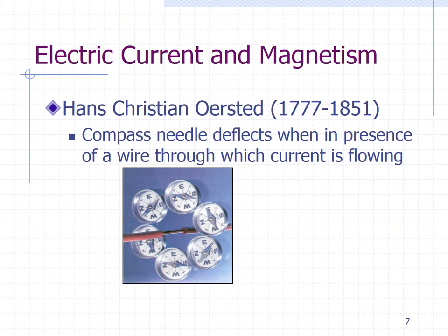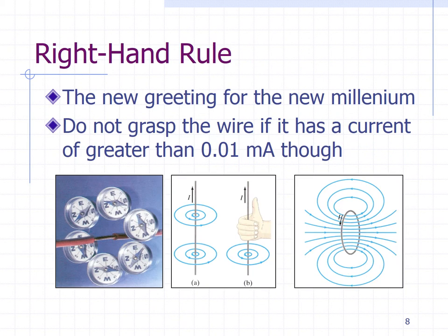So these compass needles, if there's current flowing through this wire or moving charges through this wire, the compass needles will change direction to take this circular shape. And there's a right hand rule associated with this. We're going to be using a lot of right hand rules in class. So this is our new greeting for the new millennium. If you were to place your fingers around the wire, the fingers of your right hand, with your thumb in the direction of the current, magnetic field lines would make circular paths in the direction of your fingers as shown.